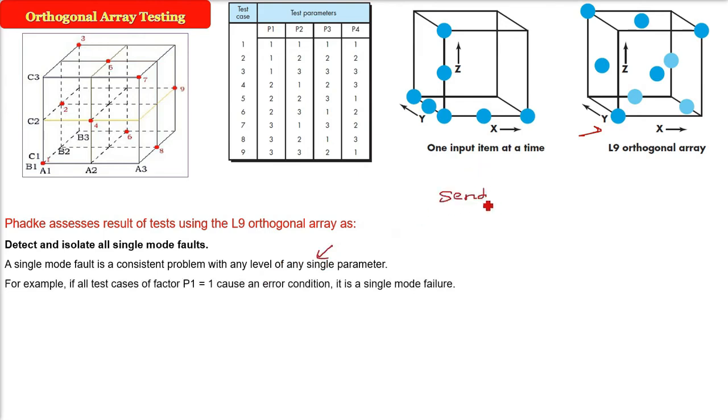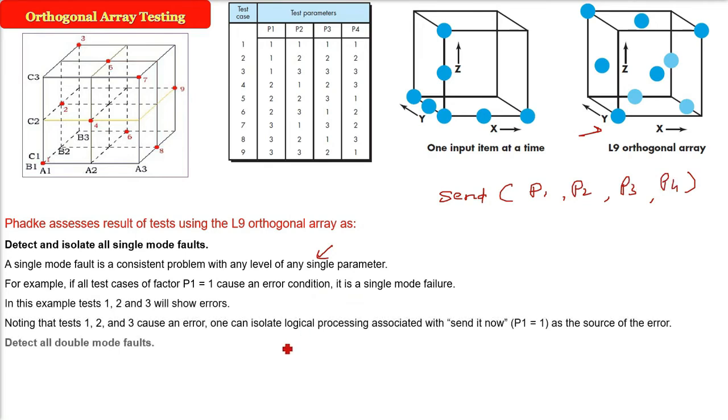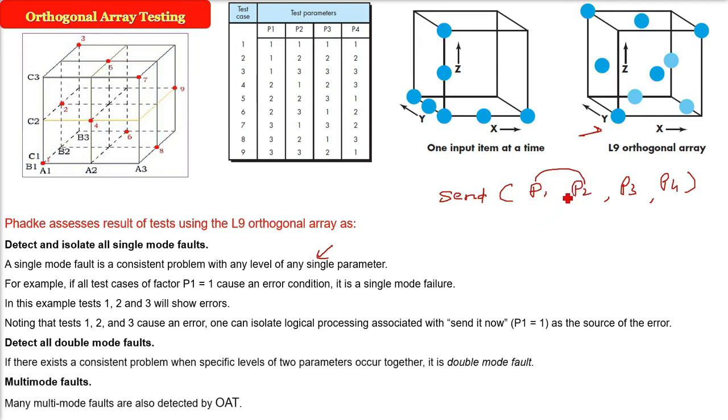That is, if we have send p1, p2, p3, p4, a single mode fault is a consistent problem with any level of any single parameter. If p equals 1 causes an error condition, it will be a single mode failure. Now the one and p1, p2, we have to choose that also. That is called the double mode faults. If only p1 or p2 or p3, p4 is giving some error, it is single mode. So p1, p2 or p1, p2 double mode. Combination of all these is multi-mode faults.